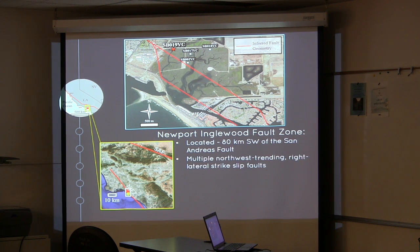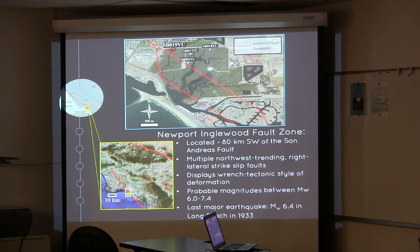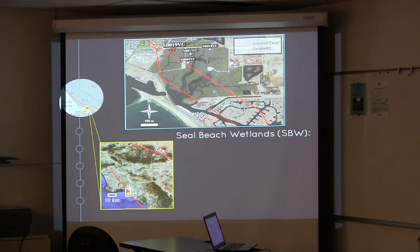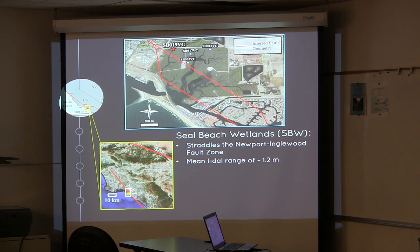The Newport-Inglewood fault zone consists of multiple northwest-trending right-lateral strike-slip faults and displays riedel tectonic style deformation. According to the Southern California Earthquake Center, probable magnitudes for this fault are between 6 to 7.4. The last major earthquake was in 1933, a magnitude 6.4. The Seal Beach wetlands are a low-lying, low-energy coastal salt marsh which straddle the Newport-Inglewood fault zone. The wetlands have a mean tidal range of 1.2 meters and are also a migratory resting point for endangered species such as the Green Sea Turtle and the Belding's Savannah Sparrow.